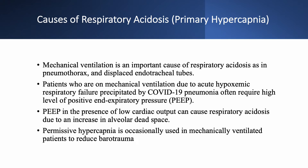An important cause of respiratory acidosis is mechanical ventilation. Some patients will suddenly develop pneumothorax or displaced endotracheal tubes. With the COVID pandemic, many patients have bilateral COVID pneumonitis with acute hypoxemic respiratory failure requiring high PEEP. When giving high PEEP in the presence of low cardiac output, you can cause respiratory acidosis by increasing alveolar dead space. Additionally, permissive hypercapnia is occasionally used intentionally in mechanically ventilated patients to reduce barotrauma.